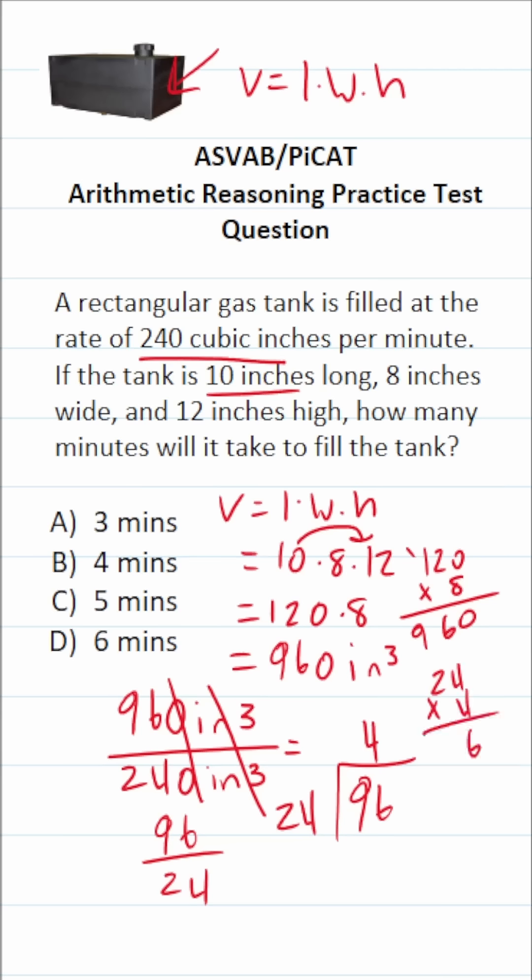4 times 4 is 16. Carry a 1. 2 times 4 is 8, plus 1 is 9. So 24 times 4 is exactly 96 with no remainder.